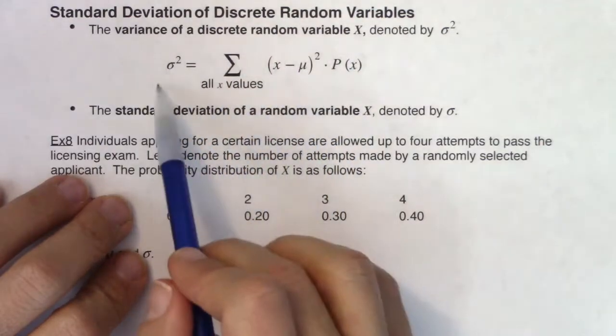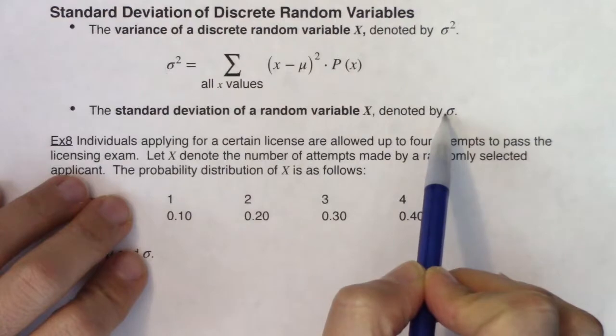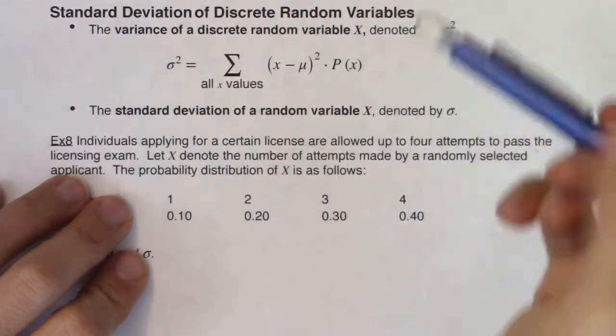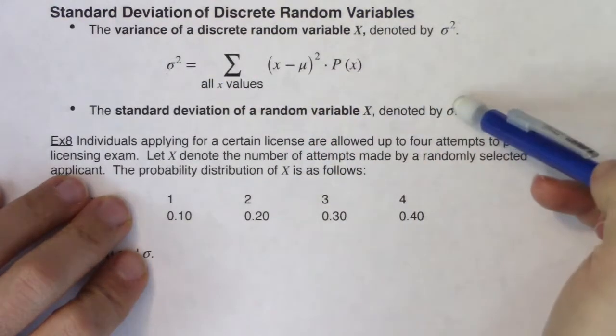Once we get that number, we will take the square root of this number and we will get to the standard deviation. And that's the same relationship we had in chapter 2, that if I had the variance and I square rooted this number, I got down to standard deviation.